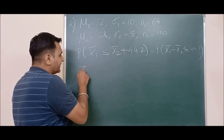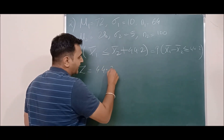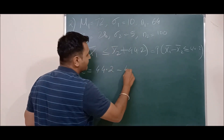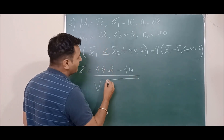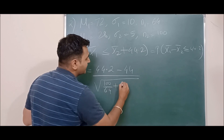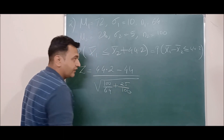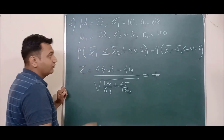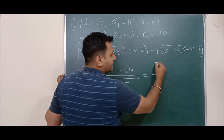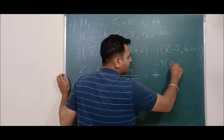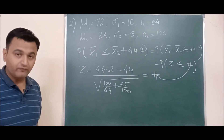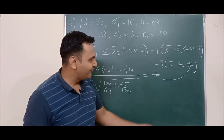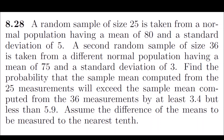Again, you compute the z value: z = (44.2 - (μ₁ - μ₂)) / √(σ₁²/n₁ + σ₂²/n₂), where μ₁ - μ₂ = 72 - 28 = 44. Solve for z to get a number, and then P(x̄₁ - x̄₂ ≤ 44.2) = P(z ≤ that number), which you can look up in the z table. The second homework is for you to compute and comment the final answer.